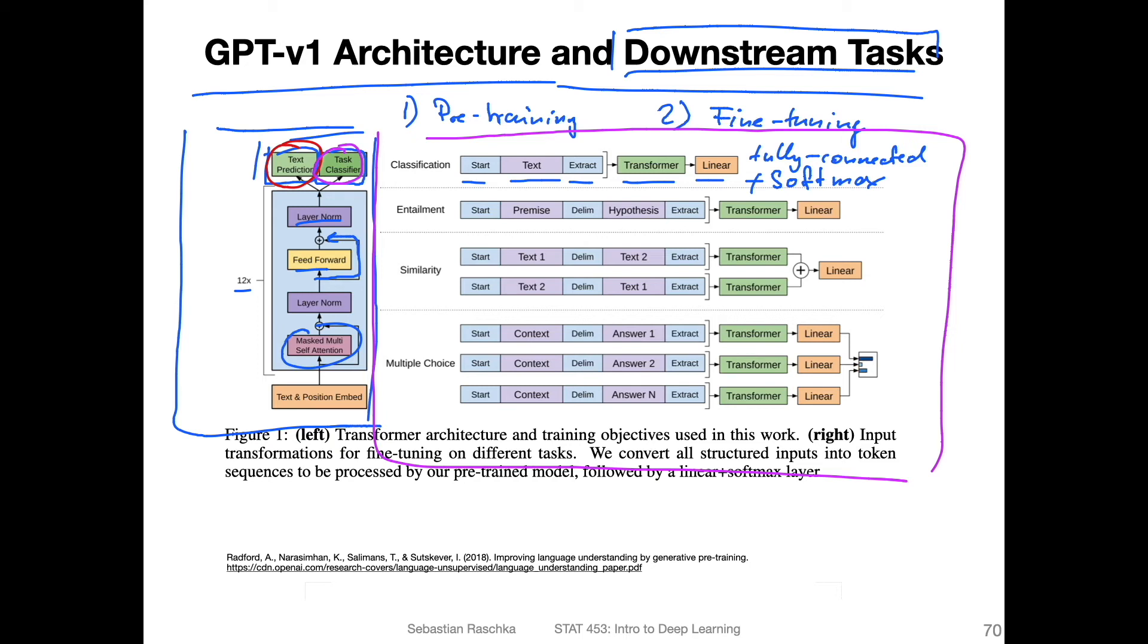They have another task called entailment, I think that's like implication in math, a logical statement. You have a premise, a delimiter, and hypothesis. I think it's also essentially a classification, like true-false. Another one is similarity here, comparing whether two texts are similar or how similar they are, measuring the similarity.